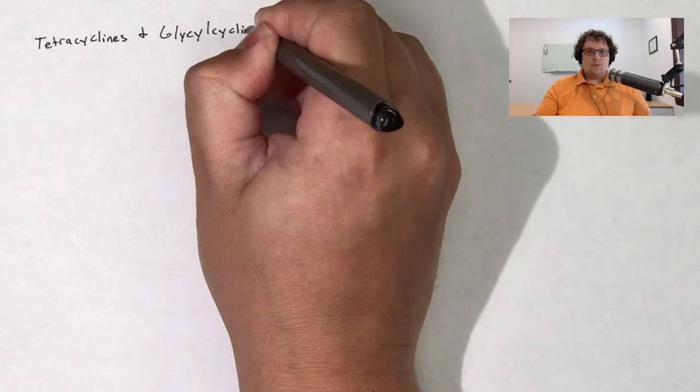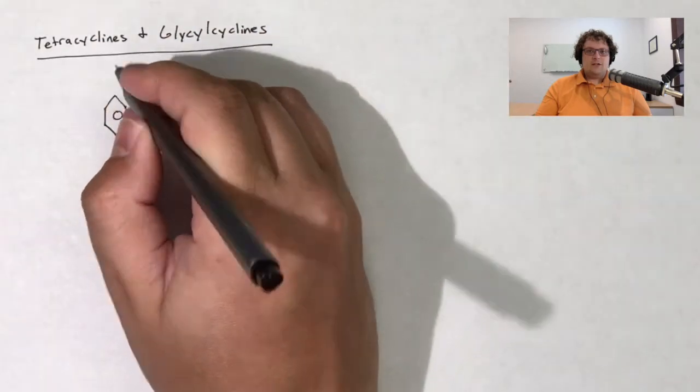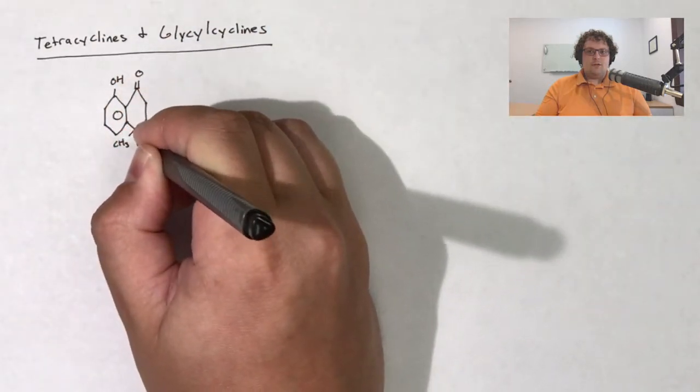Tetracyclines are characterized by the four-membered ring shown here. As an example, this is the structure of doxycycline.